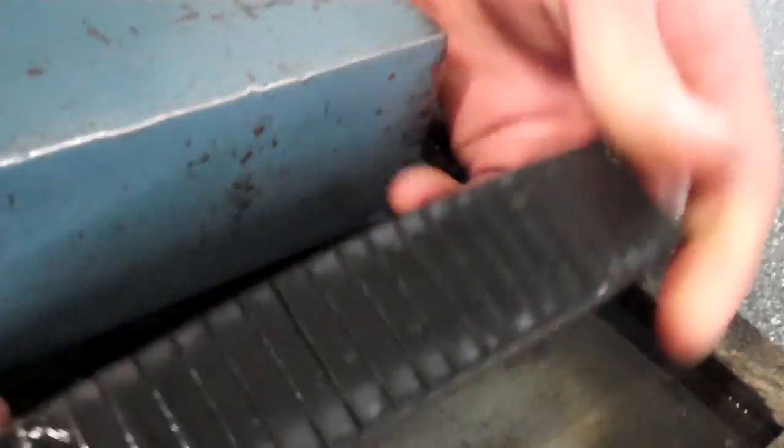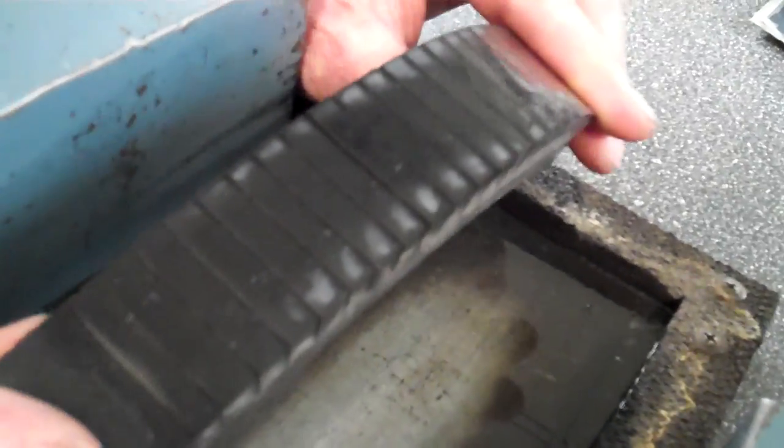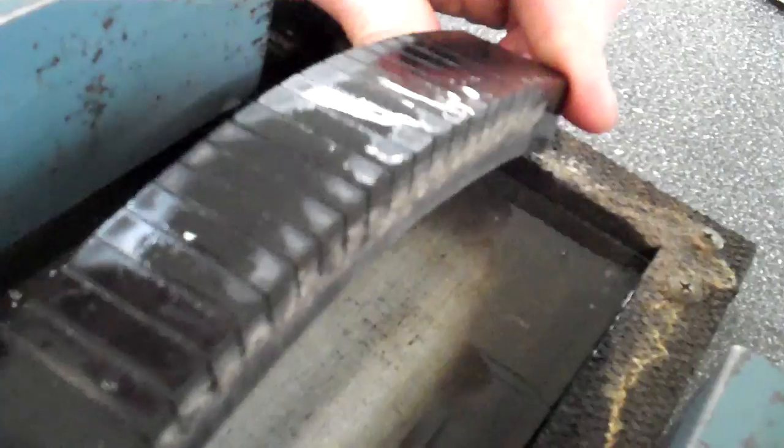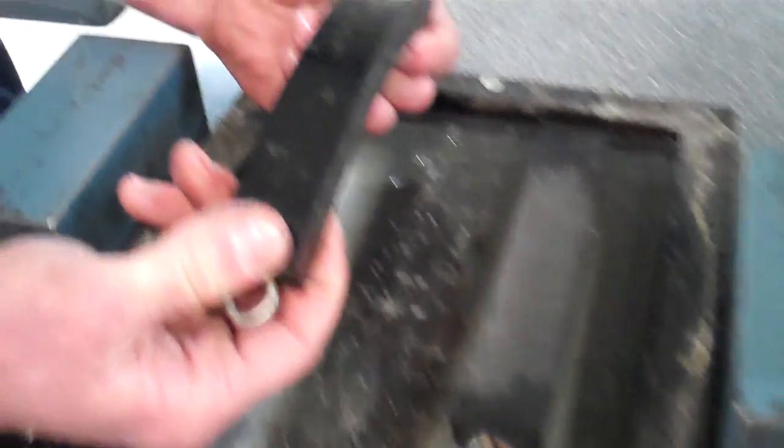And what siping is, they generally just cut it across and it creates little grooves between, and it helps the rubber to be able to grip when conditions are wet, icy, etc.